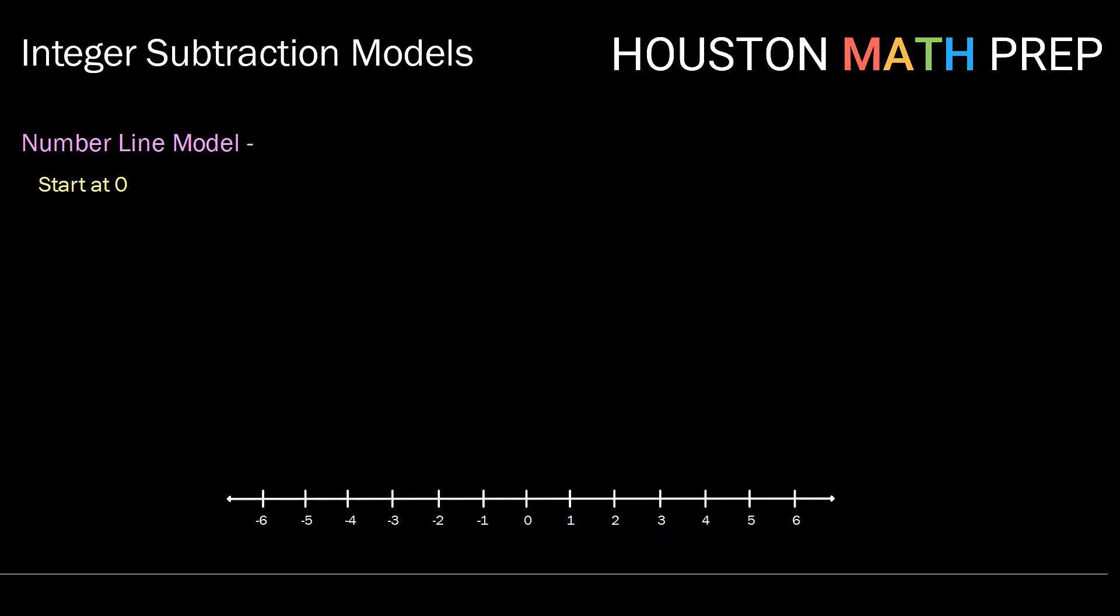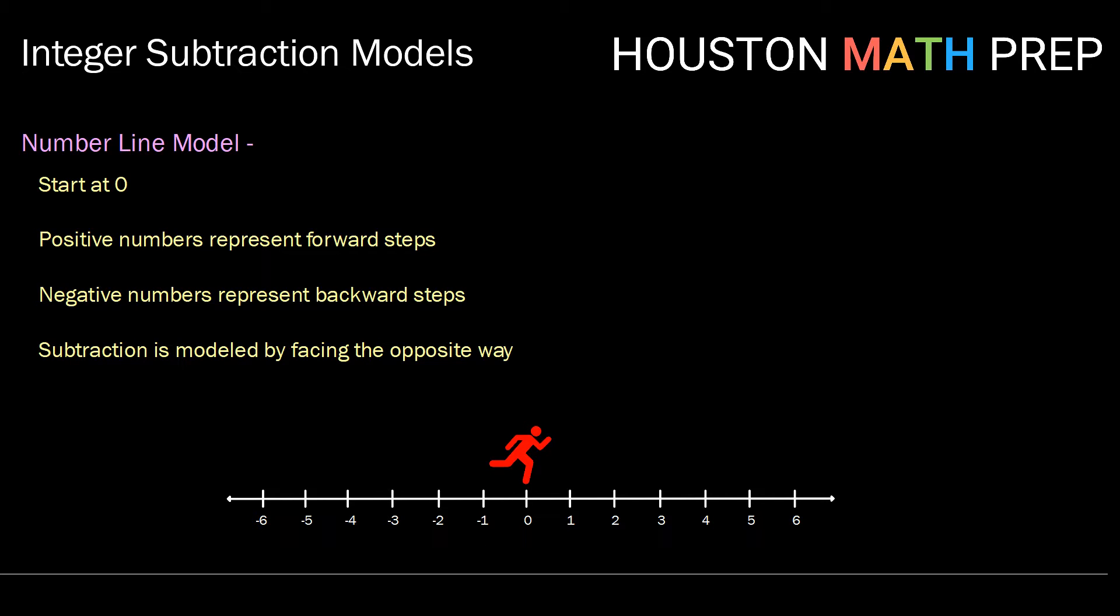So in order to model integer subtraction on the number line, we're going to start at zero. Positive numbers are going to represent forward steps. Negative numbers represent taking backward steps. And subtraction is modeled by turning and facing the opposite way. So our little character is going to flip-flop and then take the appropriate direction of step.